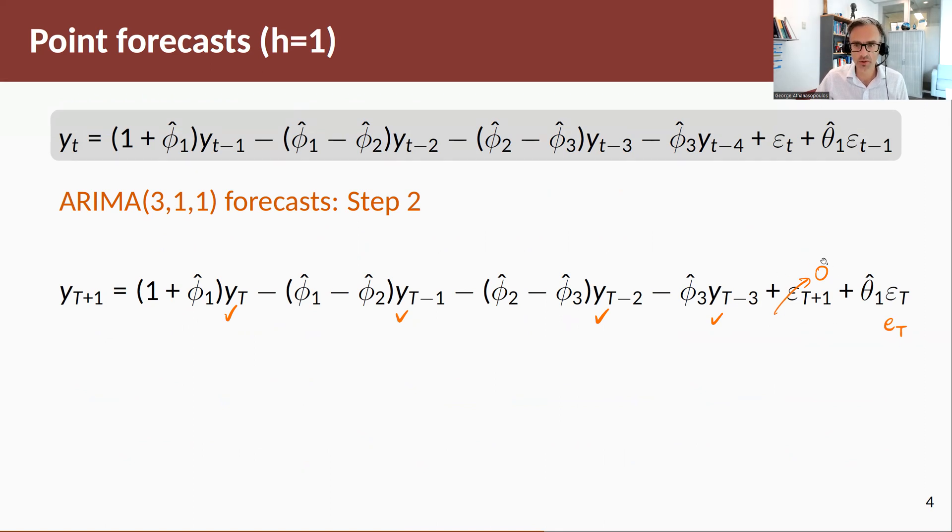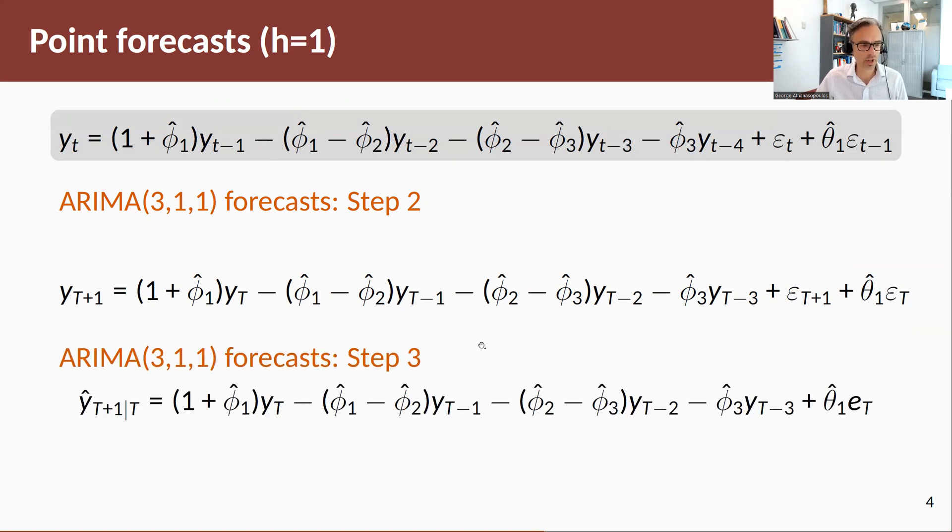We're going to replace the future error by zero, the expected value of that is zero, and we're going to replace the in-sample error by the estimated residual. Hence, my forecast for one-step ahead looks like this.